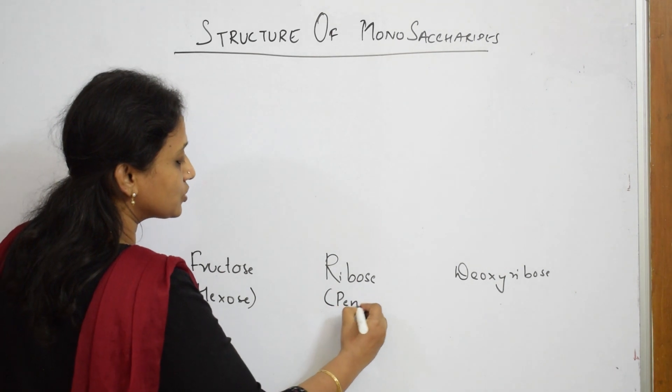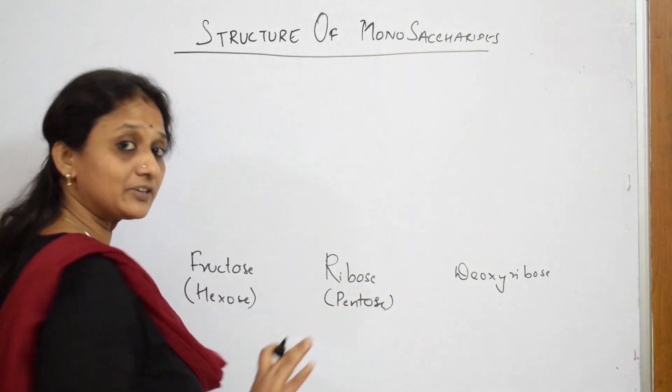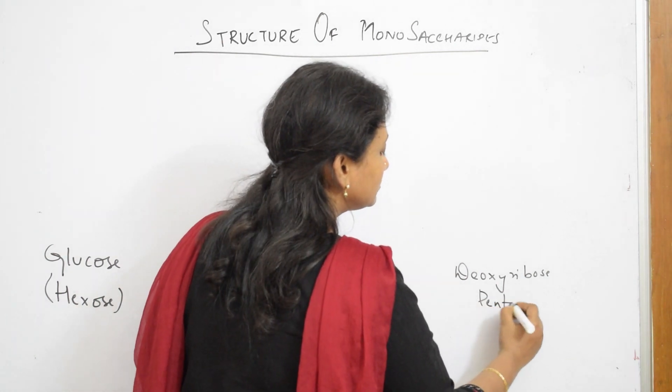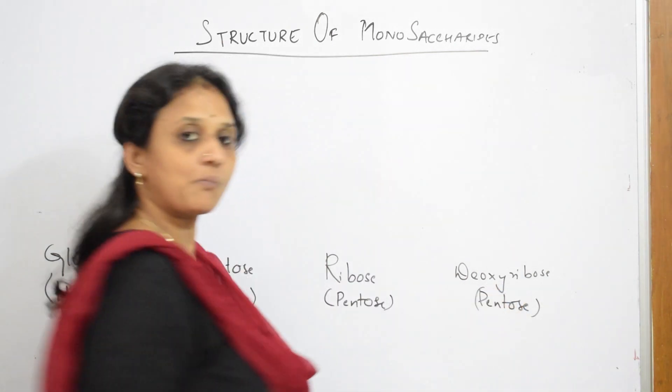Ribose is a pentose sugar. It has only five carbon atoms in its structure and deoxyribose also is pentose.